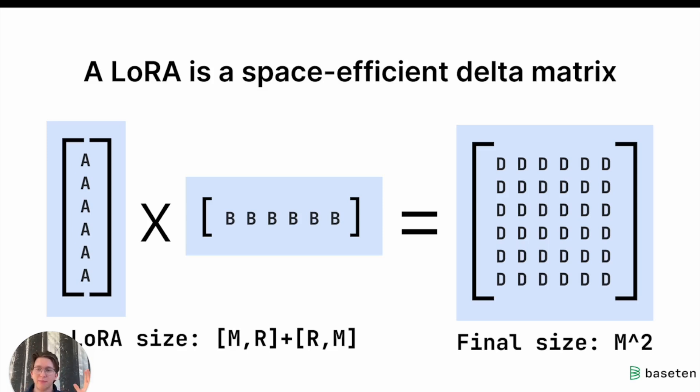So rather than being this giant matrix, we're going to have two smaller ones. And this can be 400 or 500 times fewer parameters in practice, oftentimes even less, even bigger factor of savings on parameters.